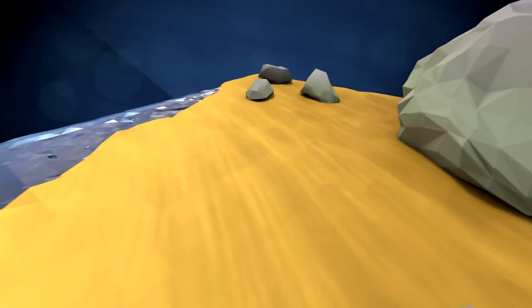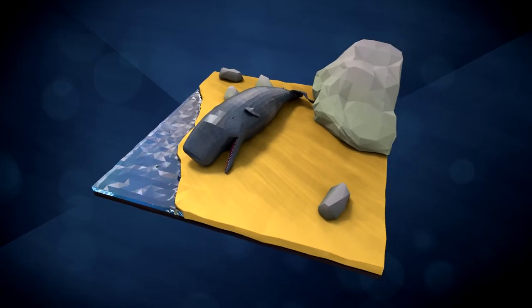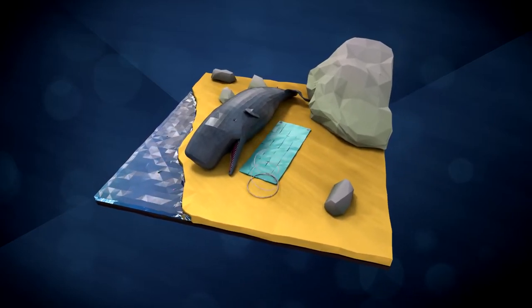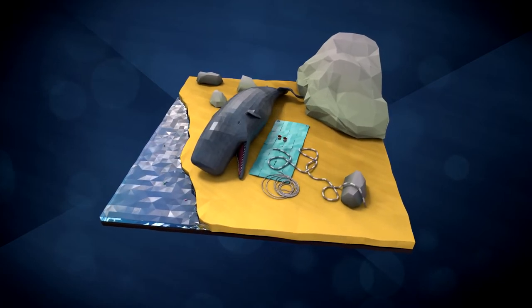When researchers examined the stomach of a beached sperm whale in 2012, they found 30 square meters of tarpaulin, a 4.5-meter-long hose, a 9-meter-long plastic rope, and two flowerpots.